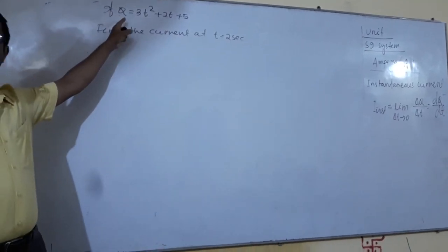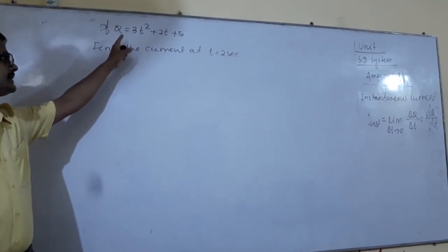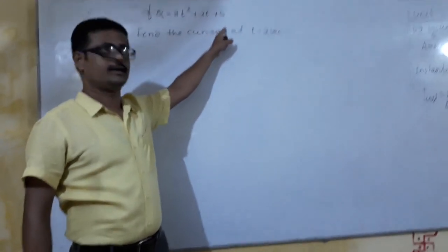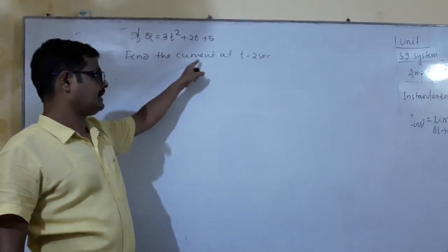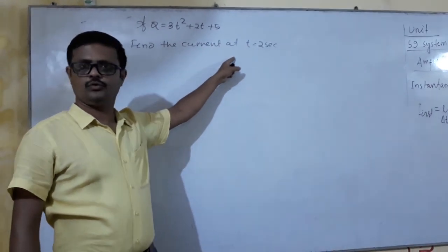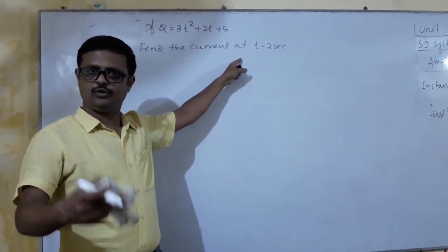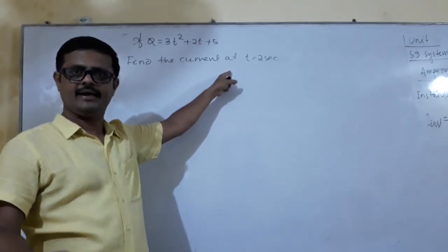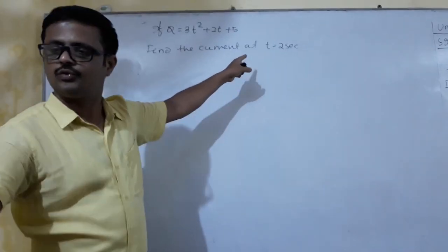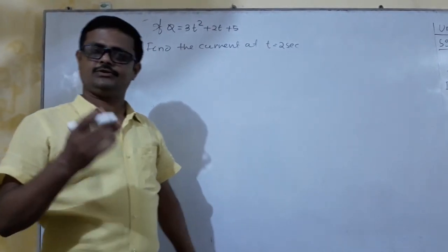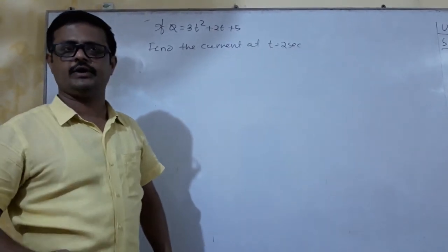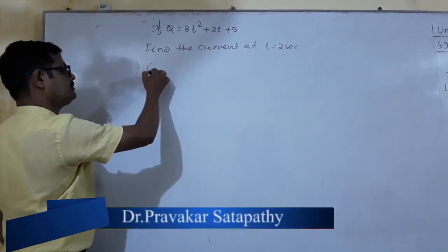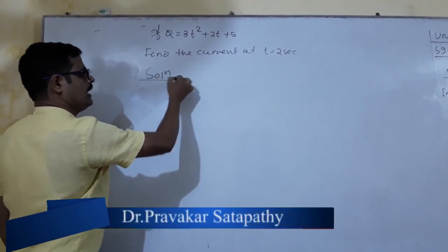This is a problem on electric current. The charge-point conductor Q is given as 3t-squared plus 2t plus 9. This will be evaluated at t equals 2 seconds. When you get these values together at 2 seconds you can connect and the solution follows from there.